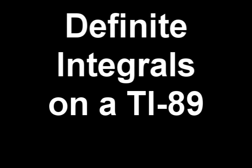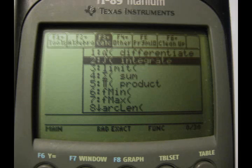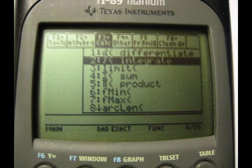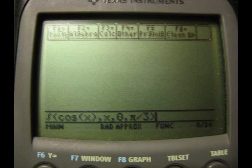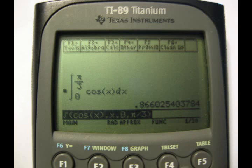To do a definite integral, press F3 and select integrate. Then, in the parenthesis, you do the function, comma, x, comma, lower bound, comma, upper bound, and then close the parenthesis and press enter.